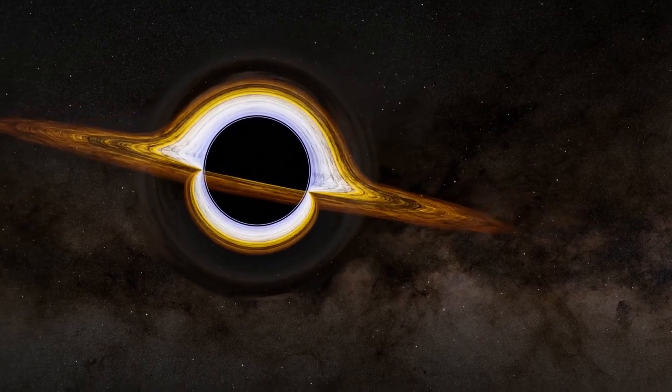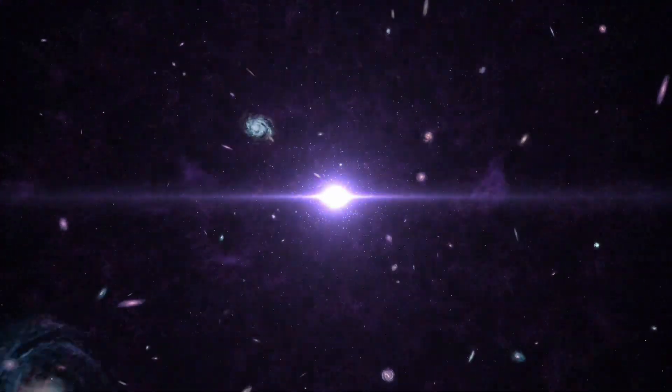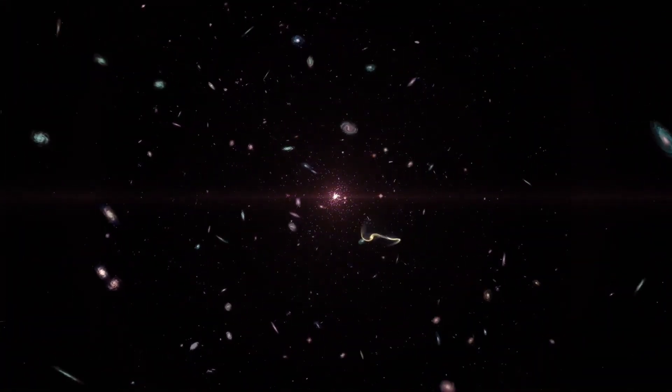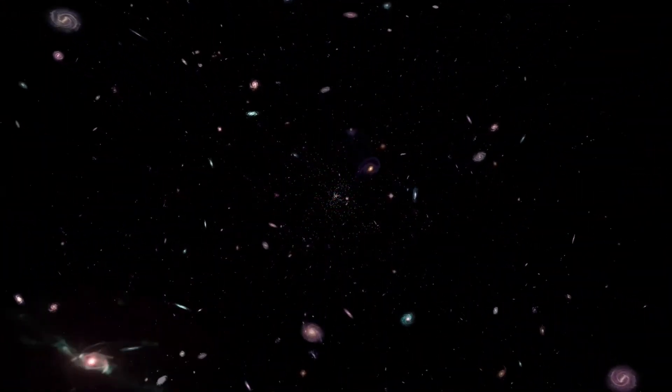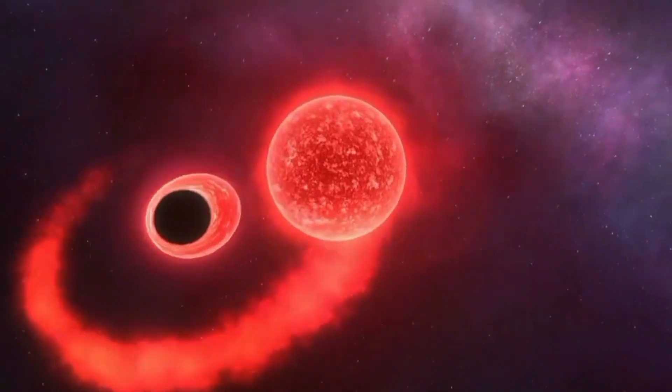For a black hole with the mass of our sun, it would take many trillion years, much longer than the current age of the universe, 13.8 billion years, to fully evaporate. The smaller the black hole, the sooner it'll burn out completely.